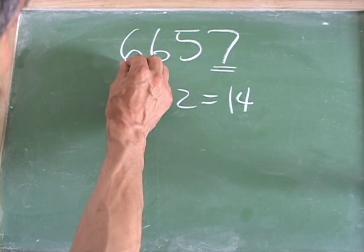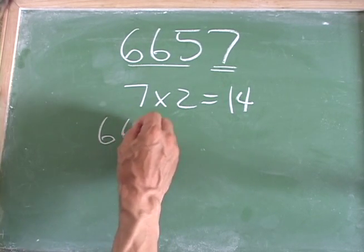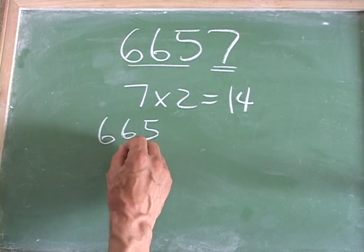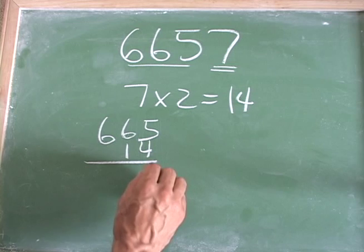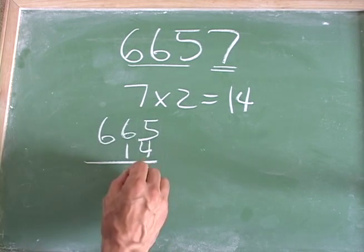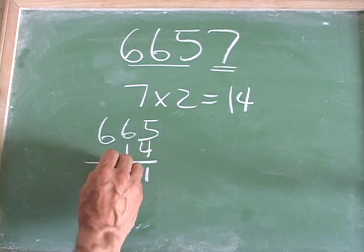Then you look at the other three numbers, which in this case is 665, and you subtract 14 from that. And so we have 5 minus 4 is 1, 6 minus 1 is 5, and then 651.